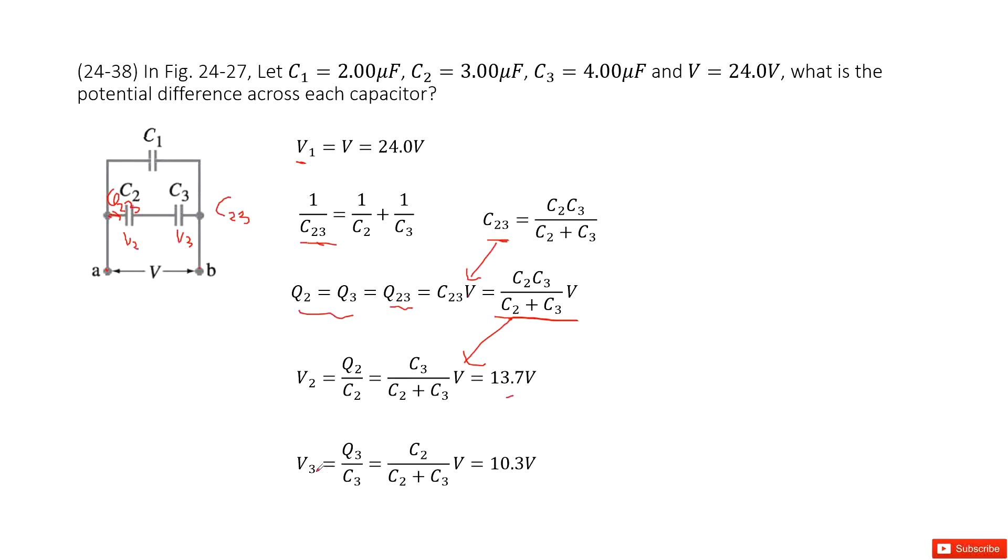For V3, very straightforwardly, we use Q3 divided by C3. Substitute Q3 in, you get the function that looks like this. Input all the given quantities and get the answer there. Thank you.